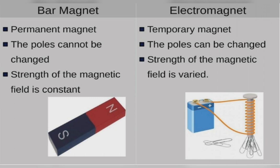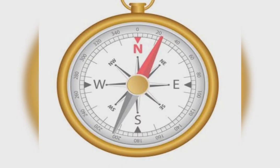What is the difference between a bar magnet and an electromagnet? A bar magnet is a permanent magnet — the poles cannot be changed and the strength of the magnetic field is constant. But in the case of an electromagnet, it is a temporary magnet, the poles can be changed, and the strength of the magnetic field can be varied.